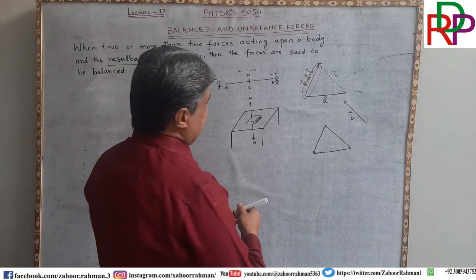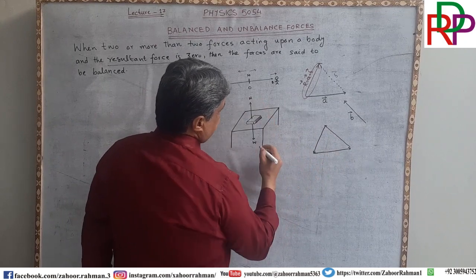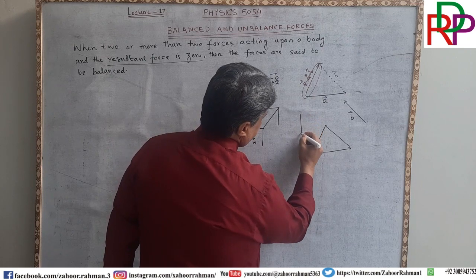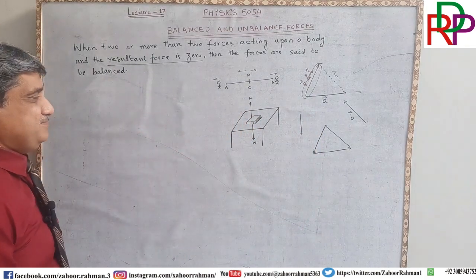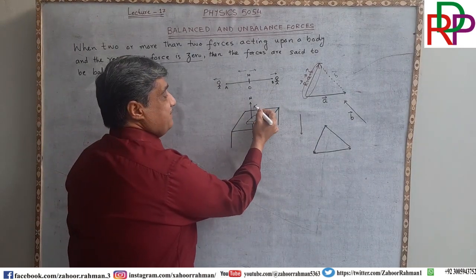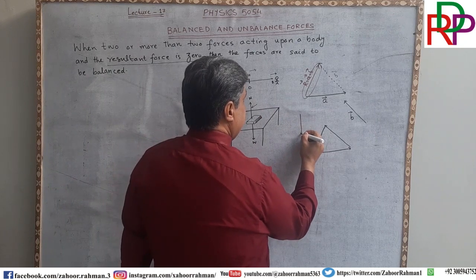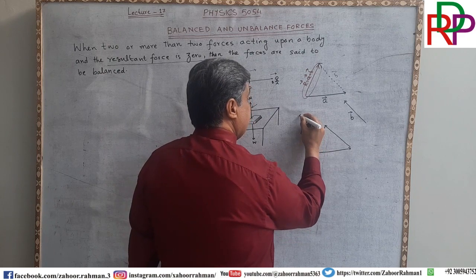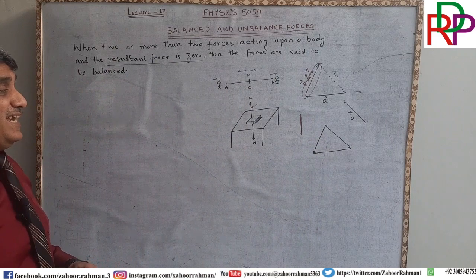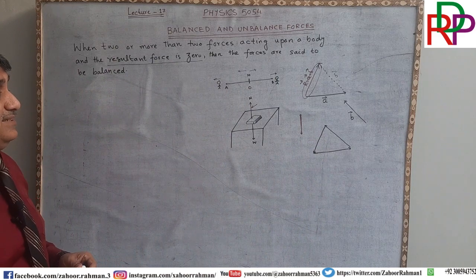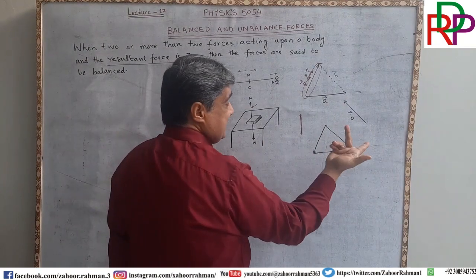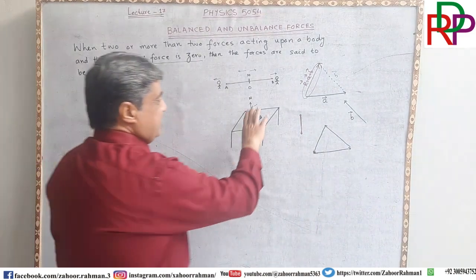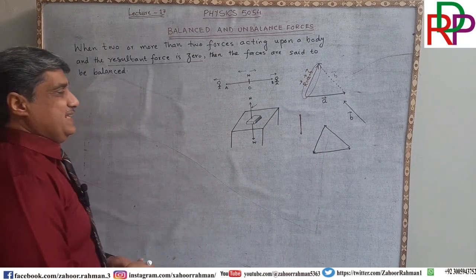Ladies and gentlemen, let me explain this in the context of a diagram. I am putting this weight and then bringing the tail of the second vector — the normal force — and attaching it to the head of the first one. You can see that there is no resultant; they are cancelling the effect of each other. There is no resultant force in this case.